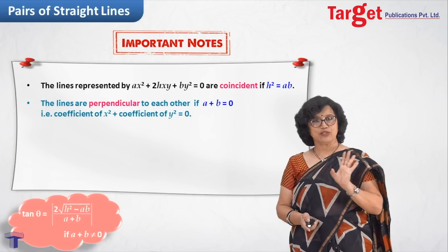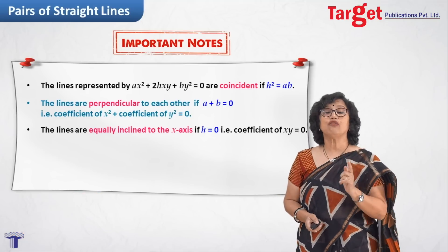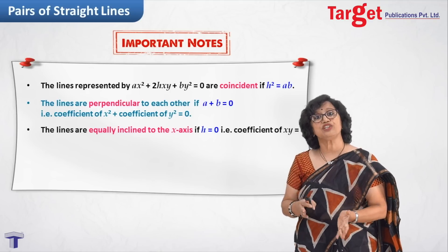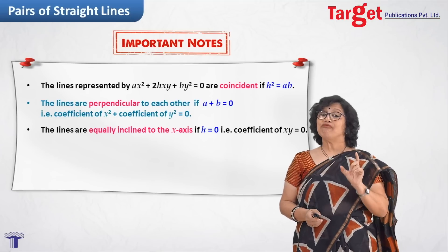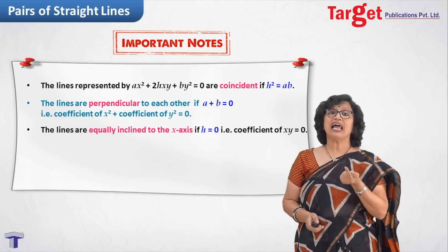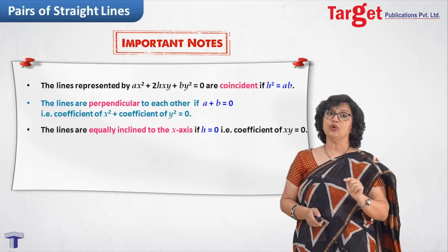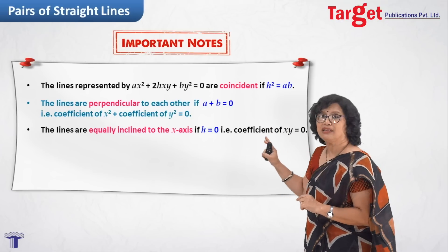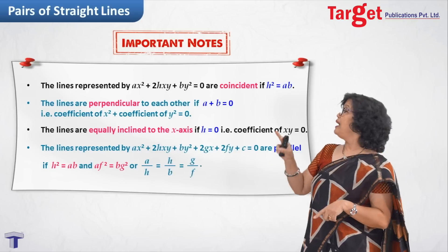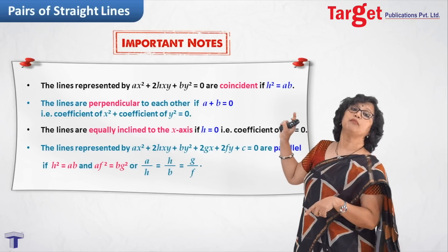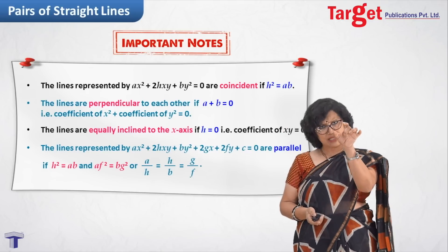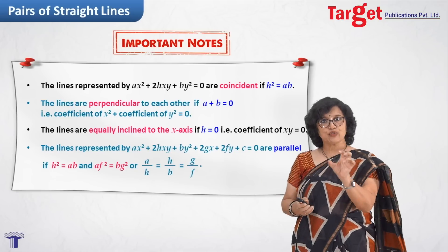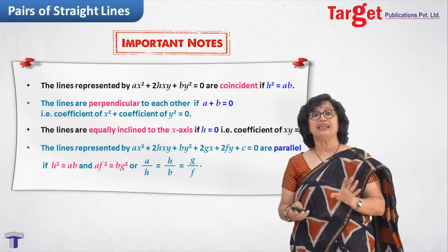That means the coefficient of x² plus the coefficient of y² equals 0. If lines are equally inclined, from the auxiliary equation bm² + 2hm + a = 0, m₁ + m₂ is the sum of the roots, which involves h. If h = 0 then m₁ + m₂ = 0 and hence the lines are equally inclined. For the non-homogeneous form, lines are parallel when h² = ab and additionally af² = bg².